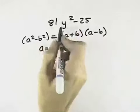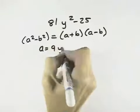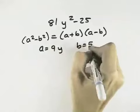So in my problem, I can identify the square root of the first term as 9y and the square root of the second term as 5.